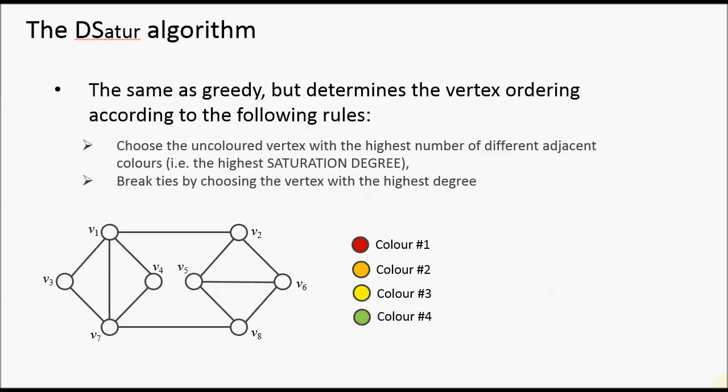An alternative to the greedy algorithm is the DSatur algorithm — very similar to the greedy algorithm, except it produces the ordering of the vertices based on certain heuristic rules. DSatur stands for degree of saturation. The saturation degree is defined as the number of different colours assigned to adjacent vertices of a particular vertex. We assign vertices with the highest saturation degrees to colours first — prioritising the most difficult to colour vertices. Ties are broken using the vertex with the highest degree, and any further ties are broken arbitrarily.